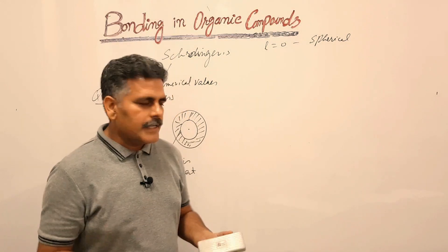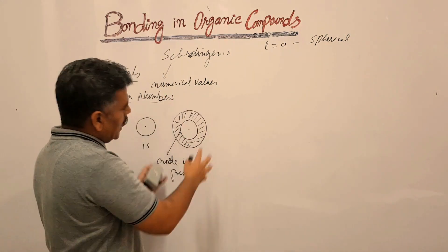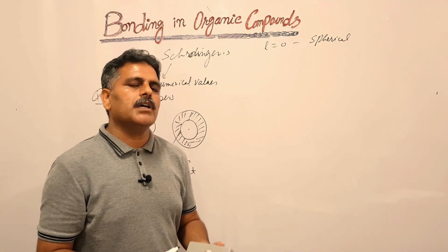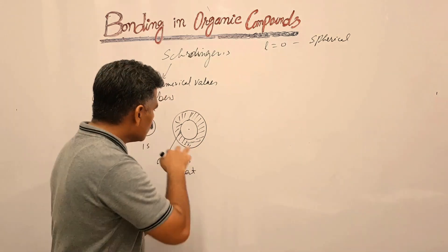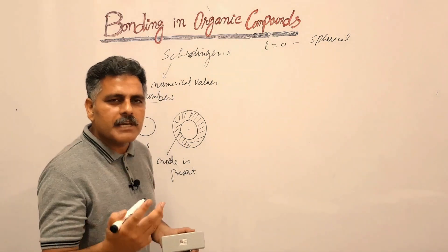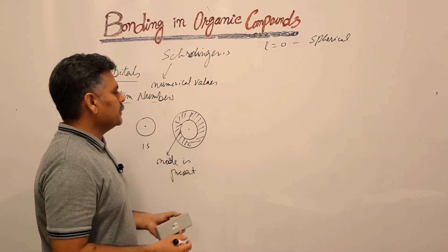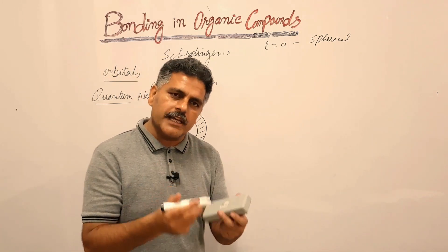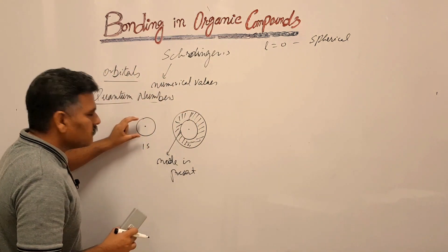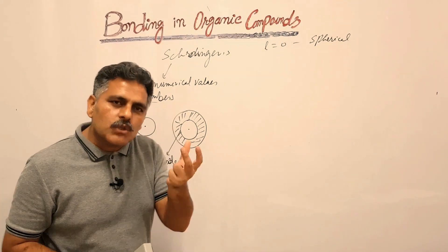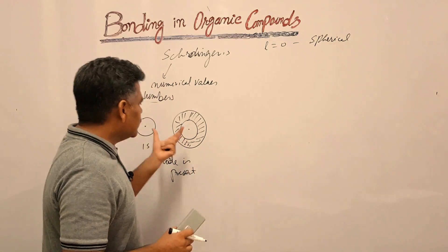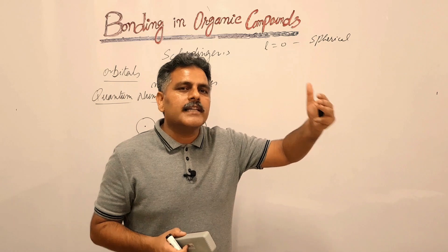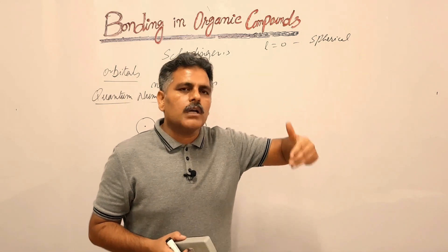A node is a place in any orbital where the electron density is zero — the probability of finding an electron in the nodal area is minimum or zero. The more nodes an orbital has, the higher its energy. The 1s orbital has zero nodes, so its energy is minimum. As you move away from the nucleus, nodes increase and energy increases.